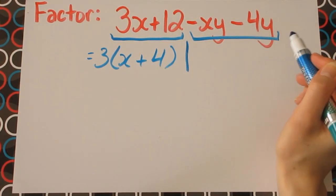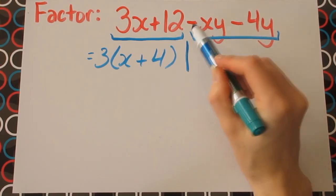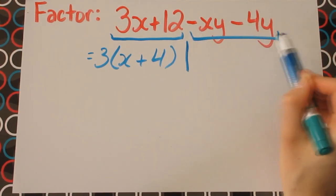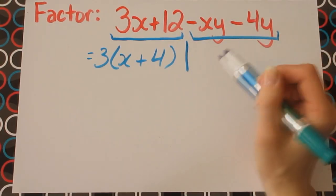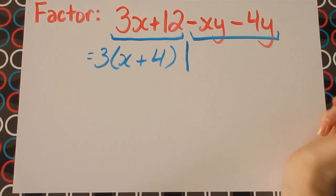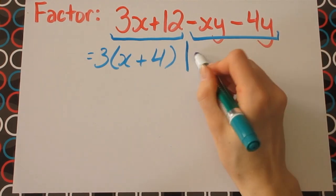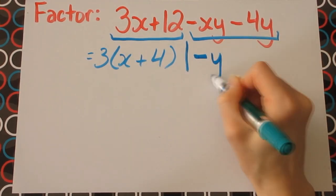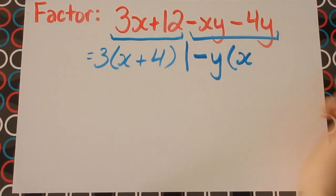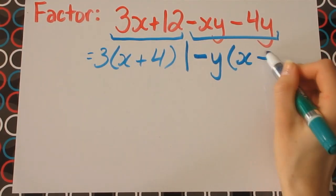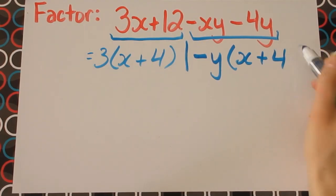For the second two terms, we have a negative xy minus 4y. We can't forget about that negative sign there because that'll be important later when we put everything together. So here you can see that the y is common to both terms, and let's just factor out that negative y. And the first term becomes positive x, and the second term becomes positive 4.